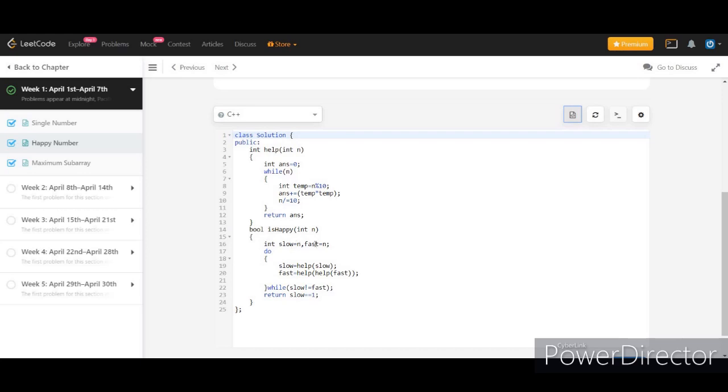This is the Floyd cycle detection algorithm which I am using here. There is a slow pointer and a fast pointer. The slow is moving one step at a time and fast is moving two steps at a time. When they are equal, we will get out of the loop. If slow equals 1, we return our answer.